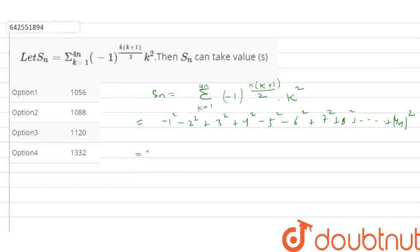Now, we will take out the odd and even terms separately. We will get minus 1 square plus 3 square minus 5 square plus 7 square till 4n minus 1 whole square, and minus 2 square plus 4 square minus 6 square, and so on, till 4n whole square.